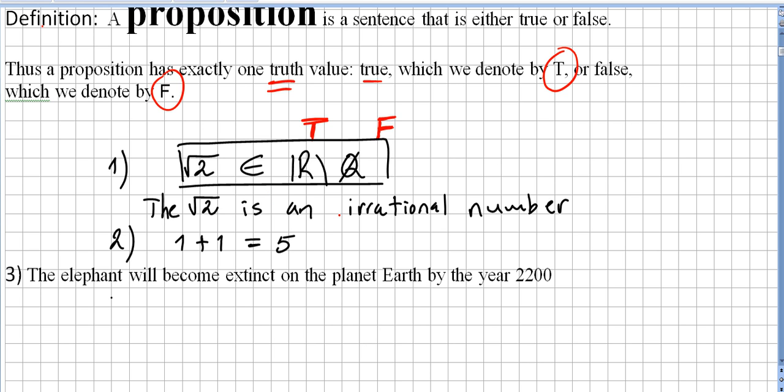Looking at these three propositions, I think you don't have to be very clever to know that the square root of 2 is an irrational number. So this proposition is obviously true. And what about 1 plus 1 equals 5? Well, it's quite obvious that this proposition is false.